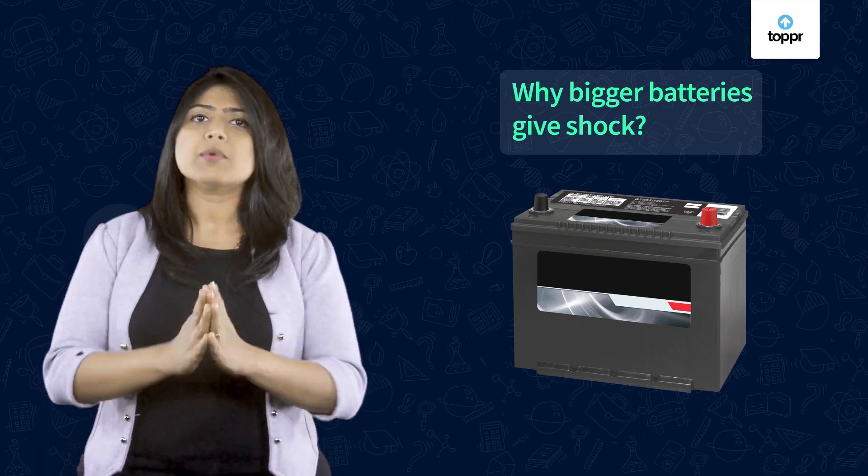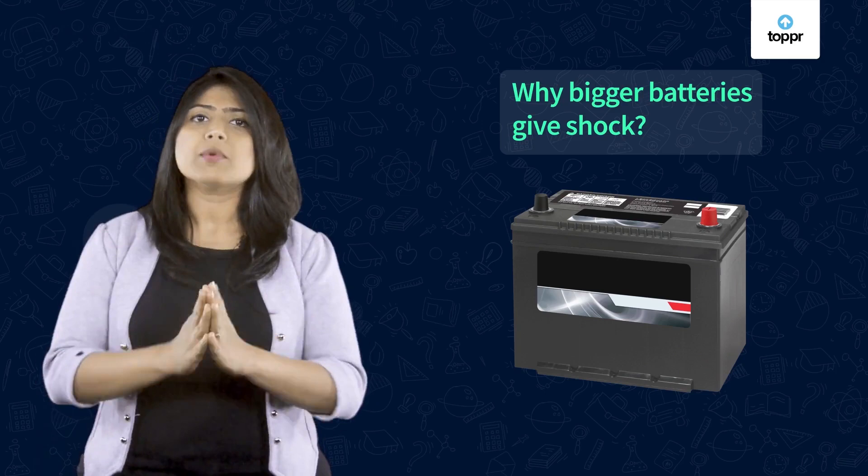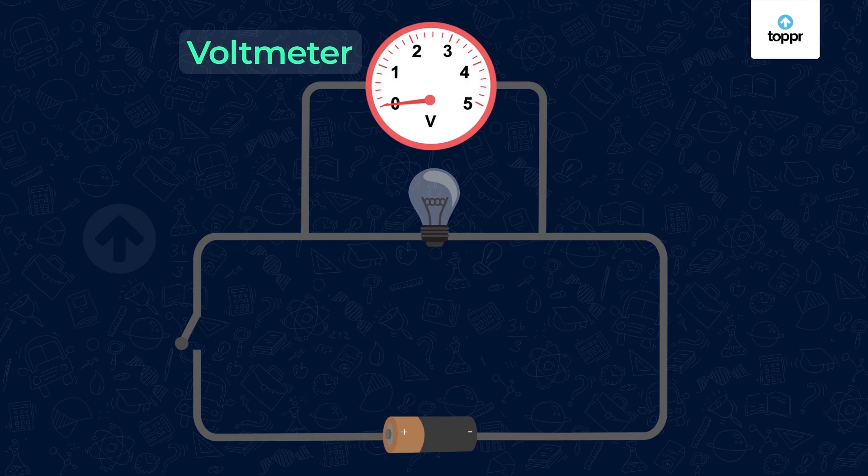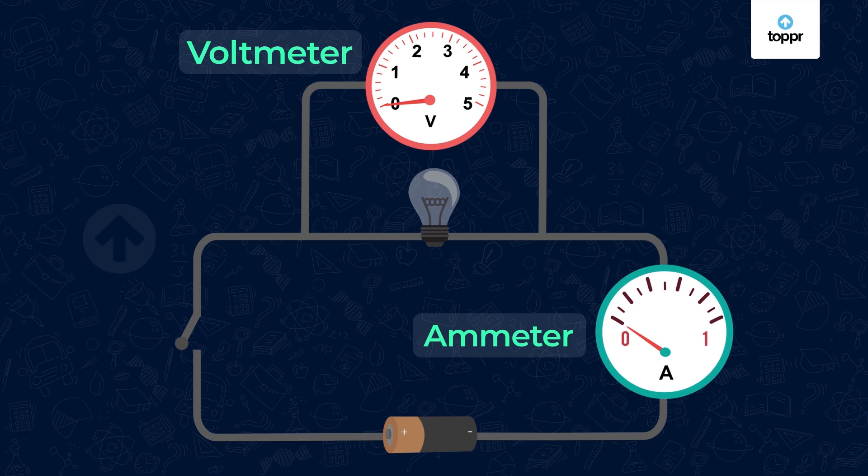I'm going to conduct a small experiment. Let us take a simple electric circuit with a bulb, cell, switch and wires. Let's add a voltmeter to measure the potential difference across the bulb and an ammeter to measure the current through the bulb.